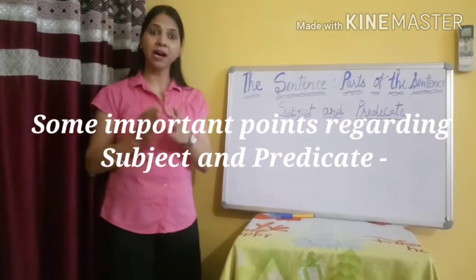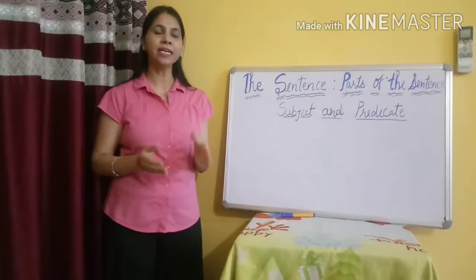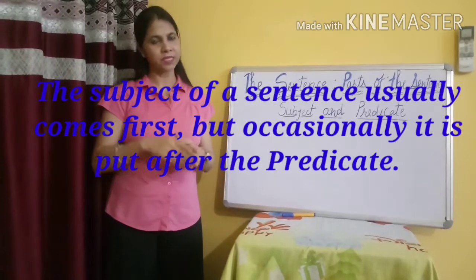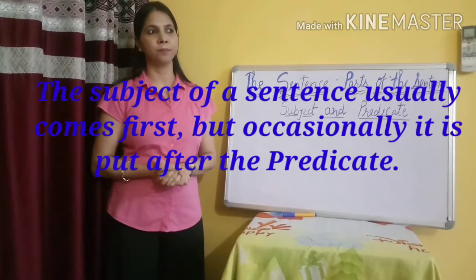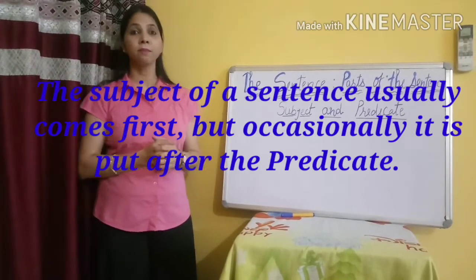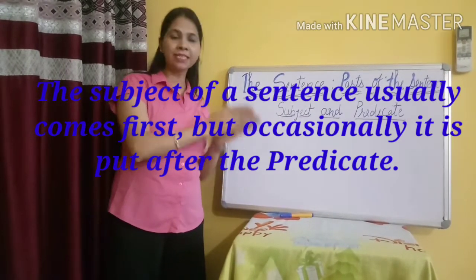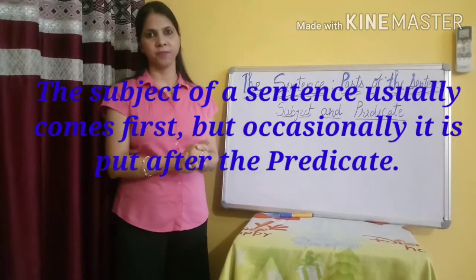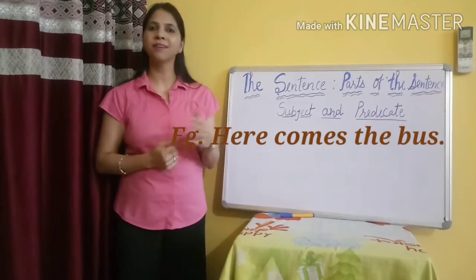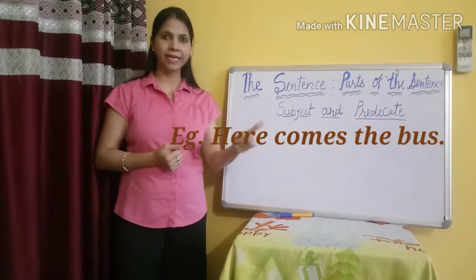There are some important things regarding subject and predicate. Usually, subject comes at the beginning of a sentence, and then comes the predicate after that. But occasionally, predicate might come first. For example: 'Here comes the bus.'